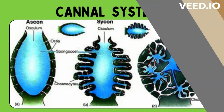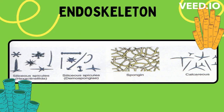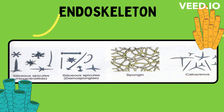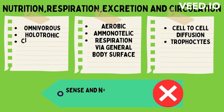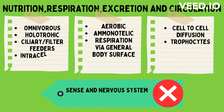The canal system may be asconoid type, syconoid type, or leuconoid type. Most sponges possess an endoskeleton secreted by special amoebocytes. It is formed of either calcareous spicules secreted by calcoblasts, or siliceous spicules secreted by silicoblasts, or of spongin fibers secreted by spongioblasts, or a combination of siliceous spicules and spongin fibers.